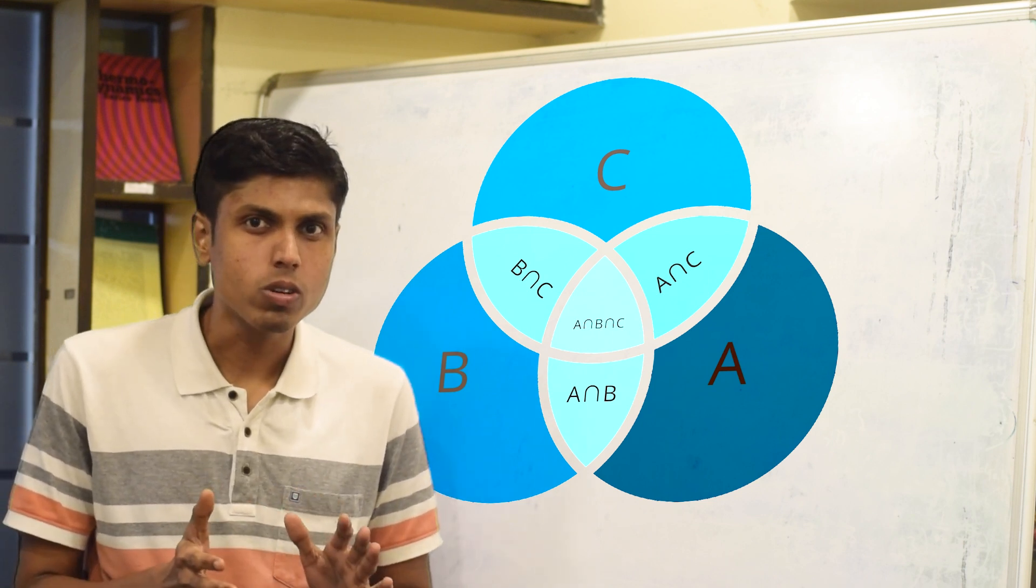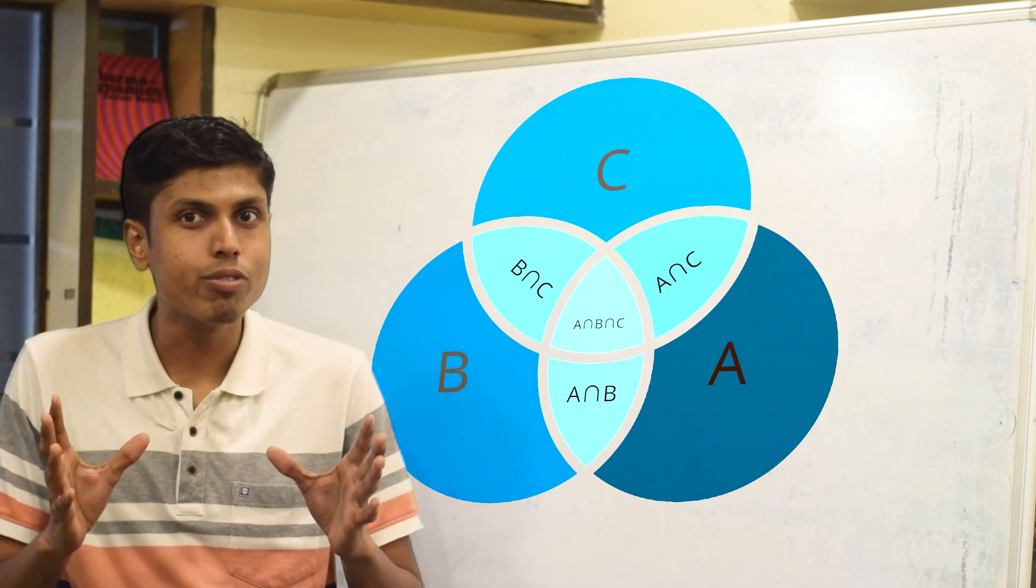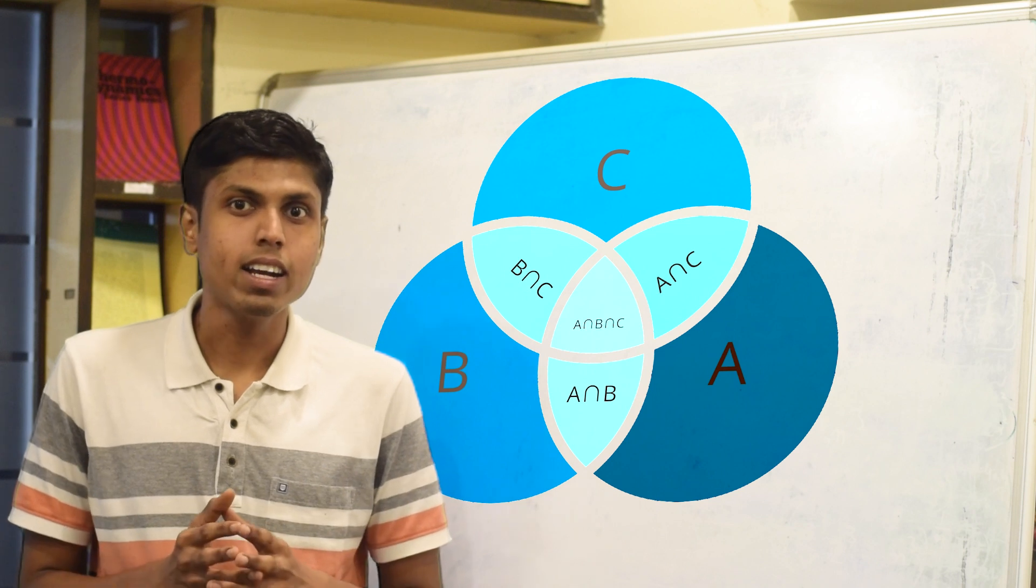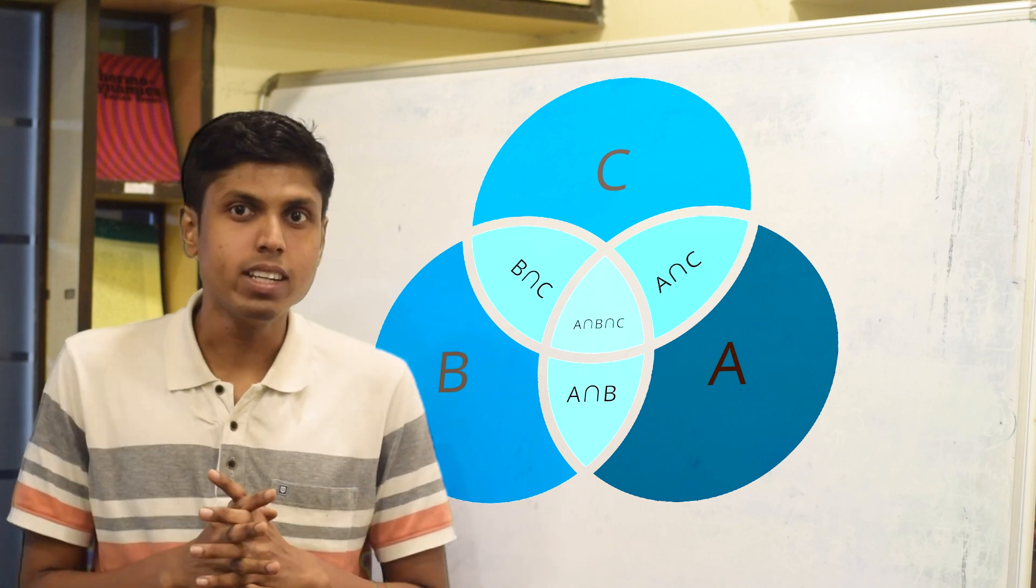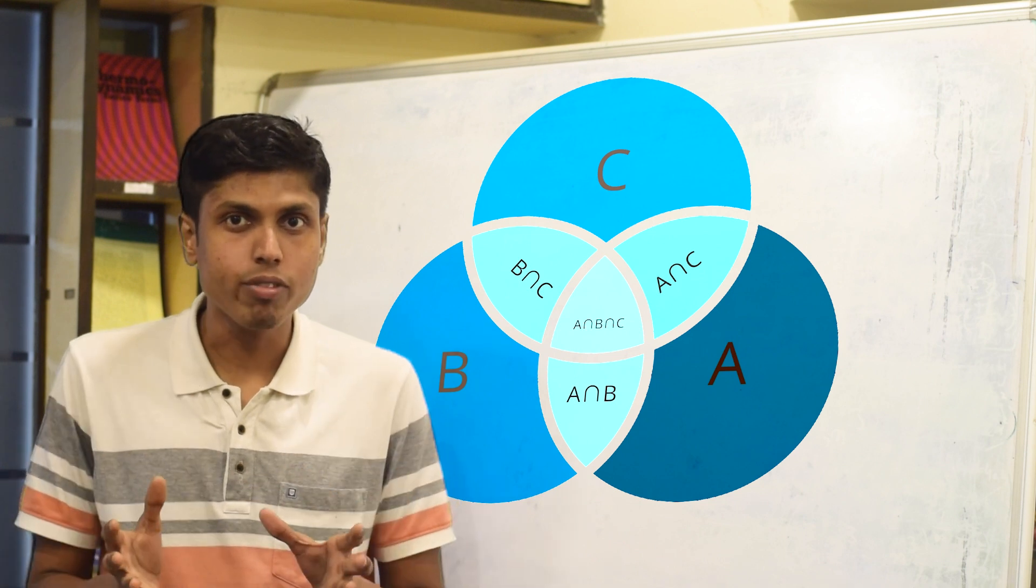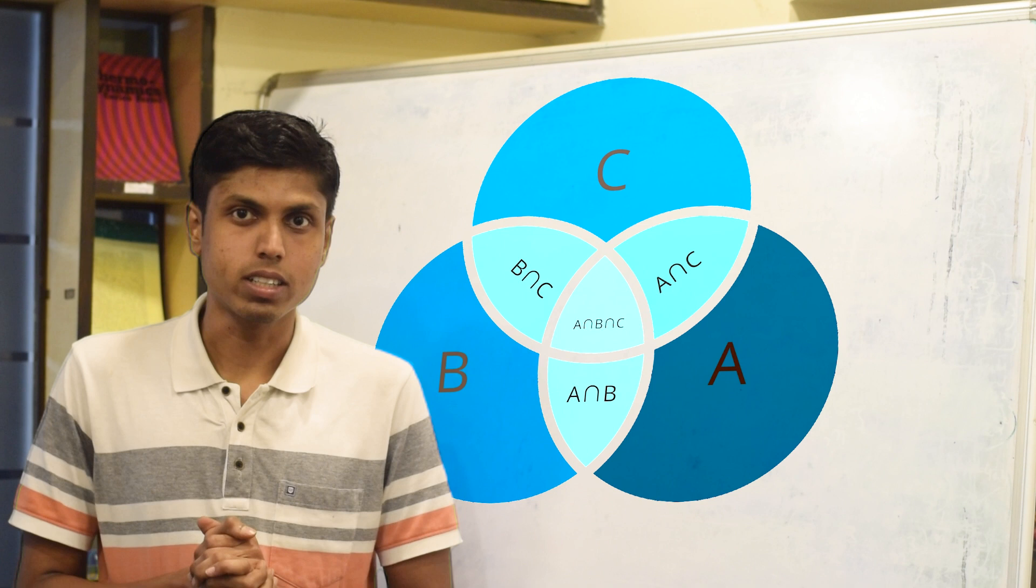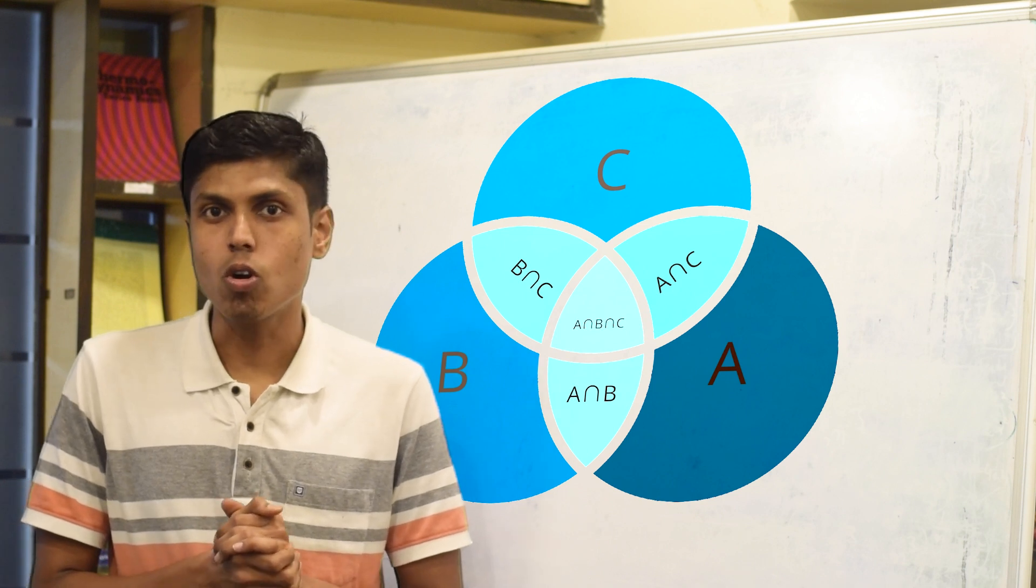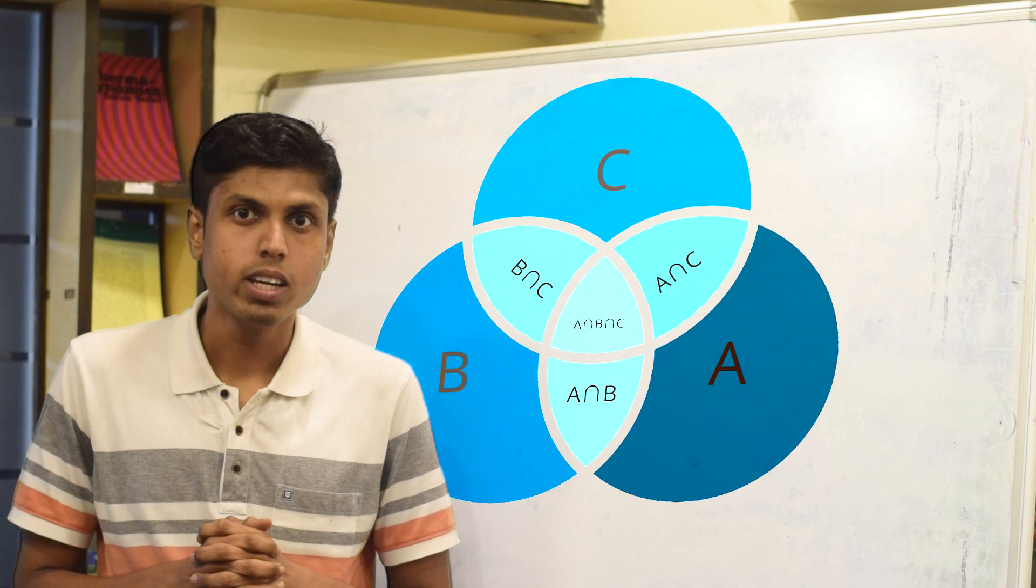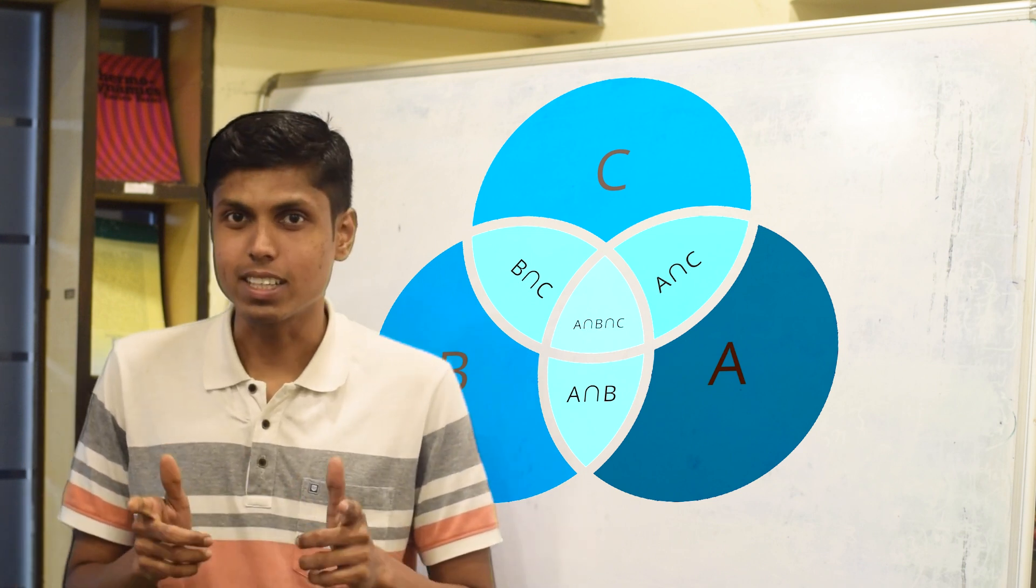This talks about counting a set which is actually a union of multiple sets. Let's say you have three sets and some elements are common within them. Then this method allows you to count the total number of elements without overcounting or undercounting. We will also solve a beautiful coloring problem based on this which is actually from AIME 2001. So let's get started.